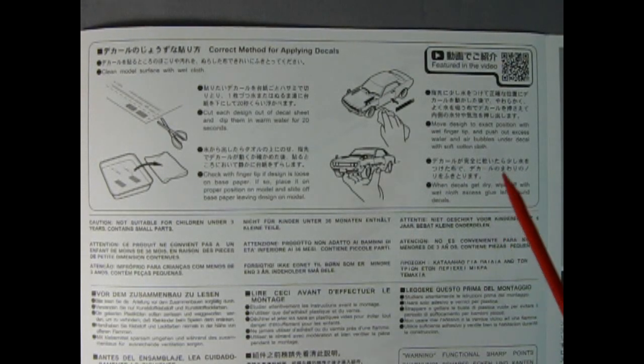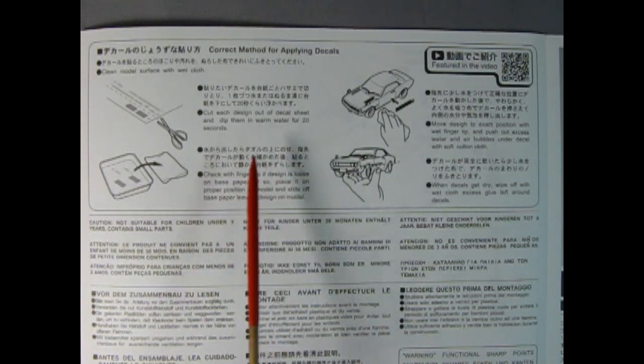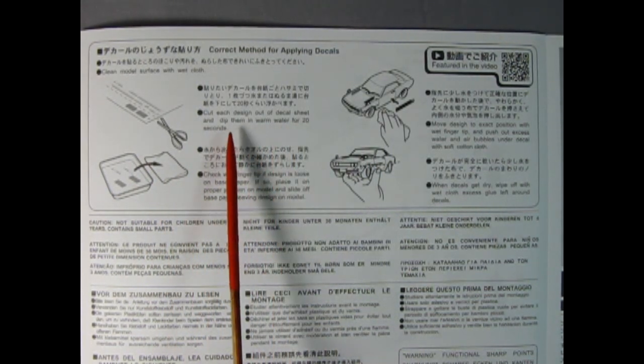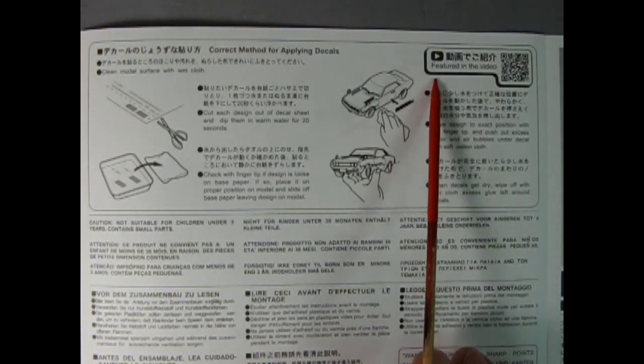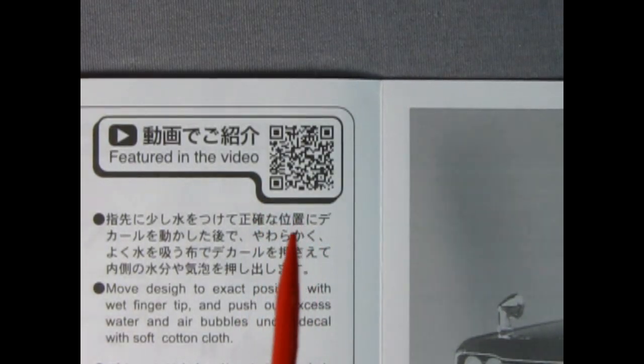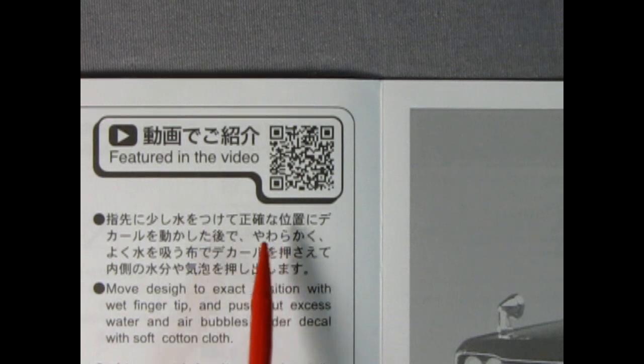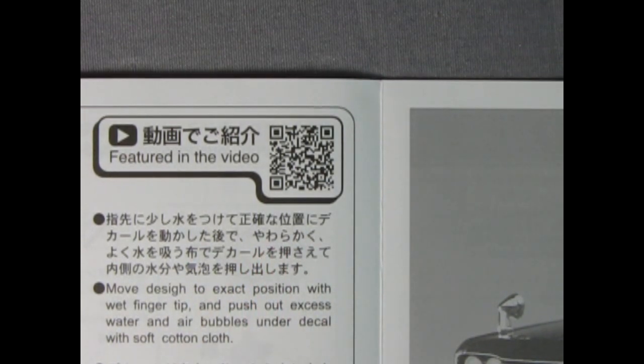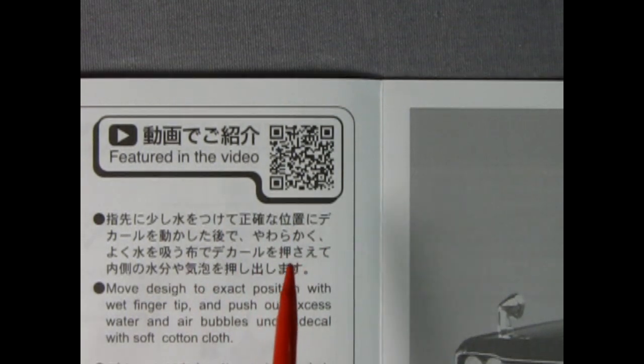As I was folding up the instruction sheet, I turned this to the back and noticed something here. It's got all these little drawings on how to apply your decals. It says cut each design out of decal sheet and dip them in warm water for 20 seconds. But look at this here, it says featured in the video and then it's got a QR code. I will zoom in on this QR code and you guys can take a picture of it with your cell phones off of this YouTube video and see what it looks like on the Hasegawa website. Getting the QR code to work off of a YouTube video which is off of the instructions, if it works let me know in the comments and post the link.